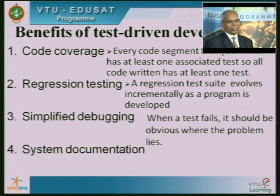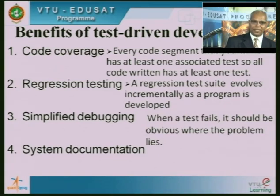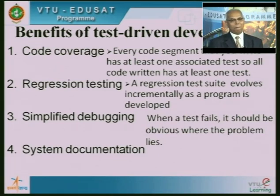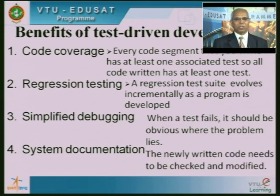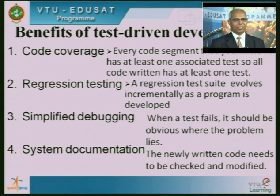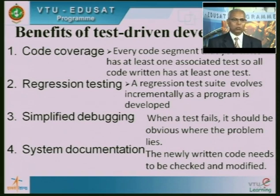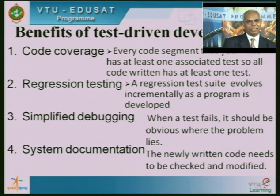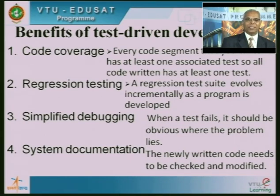Next is system documentation. Because we are developing the test alongside the code, we know what kind of functionality has evolved. Documentation development also becomes easier. The newly written code needs to be checked and modified, and documentation is evolved immediately along with it. These are some of the advantages of test-driven development. That is why this mechanism is used — essentially in agile programming, but also in other environments.